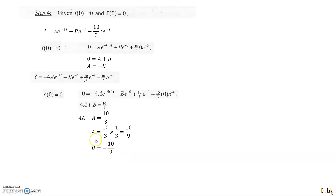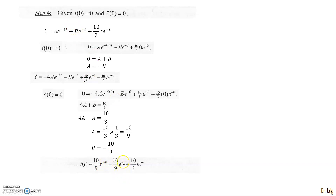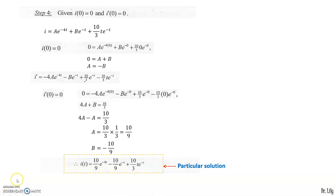Finally, substituting A = 10/9 and B = −10/9 into the general solution, the particular solution is: I = (10/9)·e^(−4t) − (10/9)·e^(−t) + (10/3)·t·e^(−t). This is the particular solution for the ODE. That's all for this example — thanks for watching.